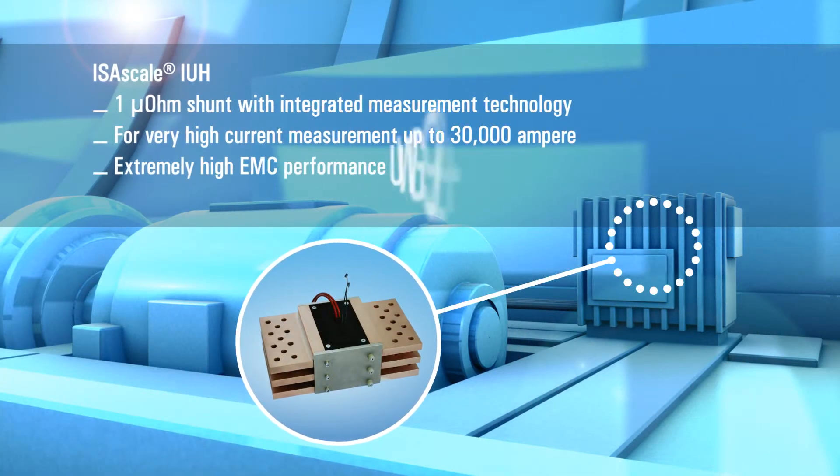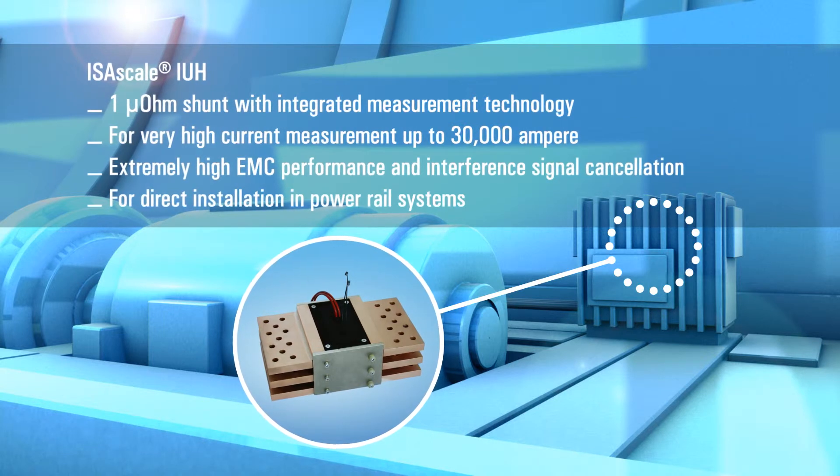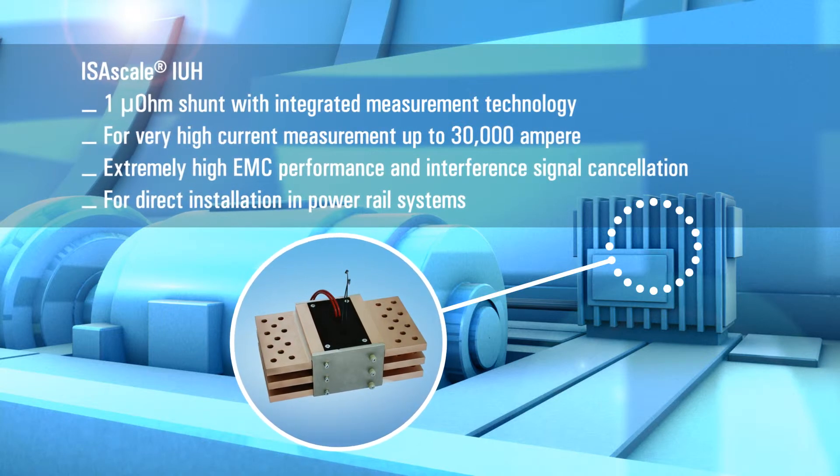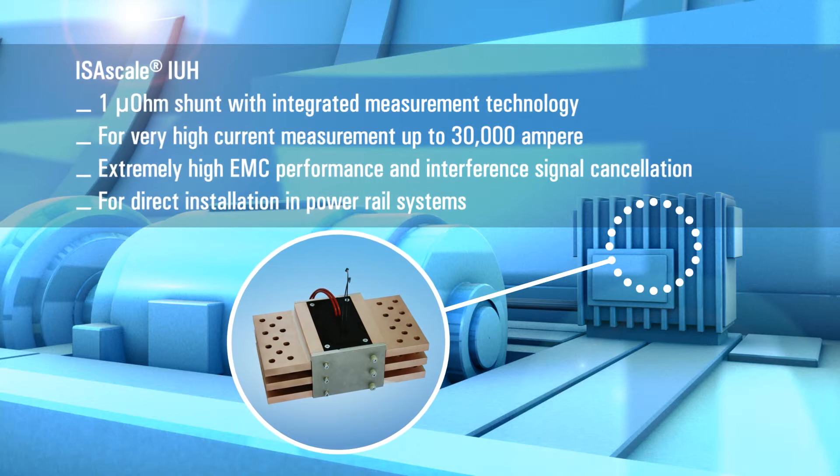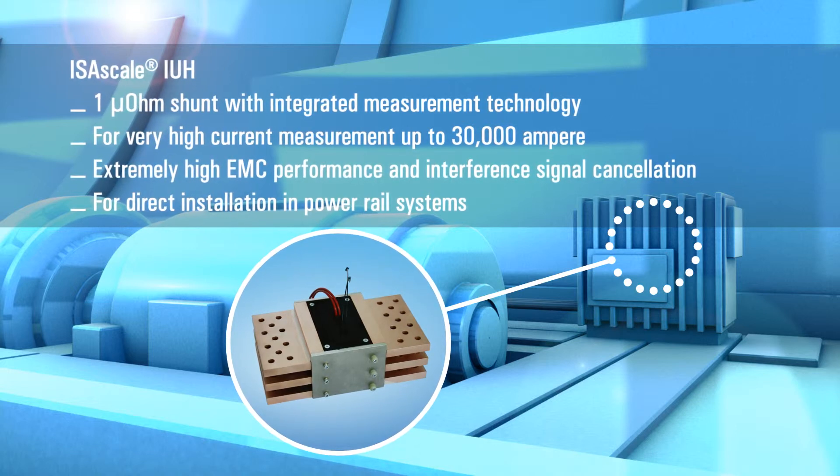The IUH series facilitates high precision current measurements up to 30,000 amps continuous. This is a crucial requirement for higher degrees of efficiency.